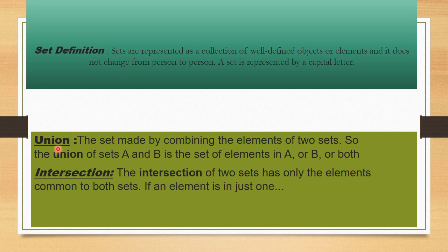What is union? The set made by combining the elements of two sets. So the union of sets A and B is the set of elements in A, or B, or both. Combination of two sets is called union.